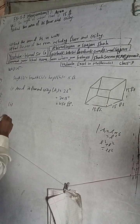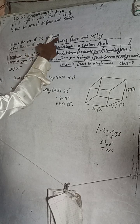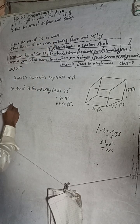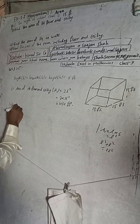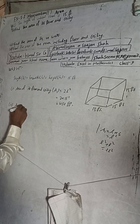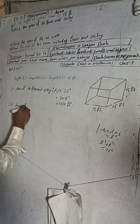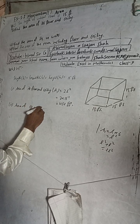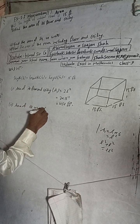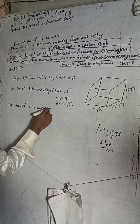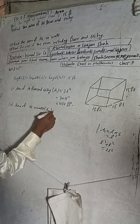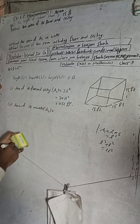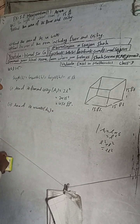Number two: find the area of its four walls. We call this A2. The formula for the area of four walls is what we need to apply here.